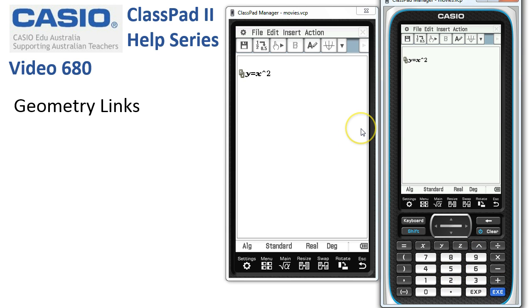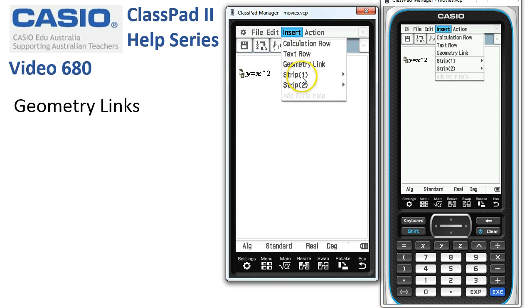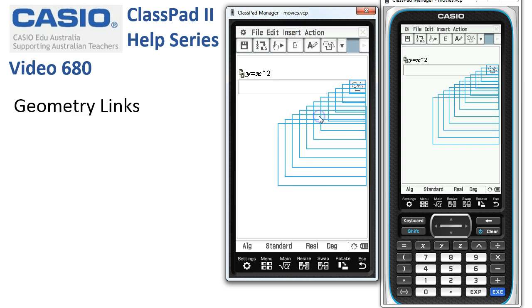And let's then insert beneath it a geometry strip. So insert strip 1, a geometry strip.